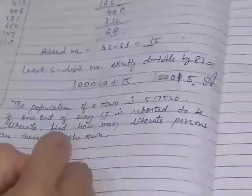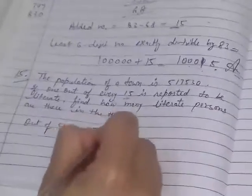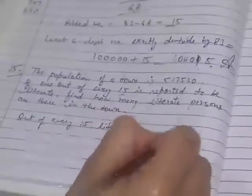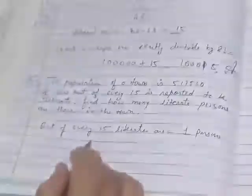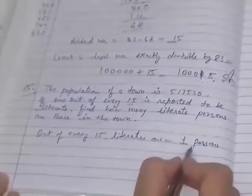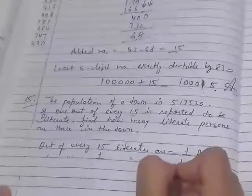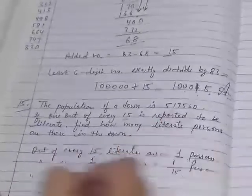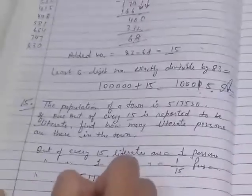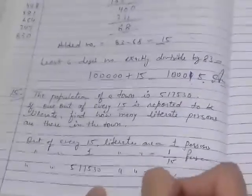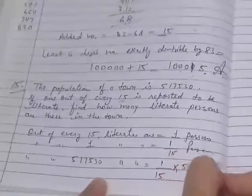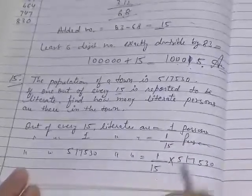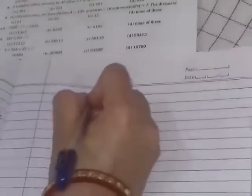Out of every 15, literate are 1 person. Then out of every 1 using unitary method, literate are 1 upon 15. And we have to find out, out of every 517530, literates are 1 upon 15 multiply 517530. 15 is in denominator, it means these both are divided. But here we will divide.